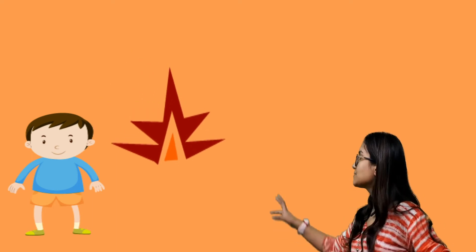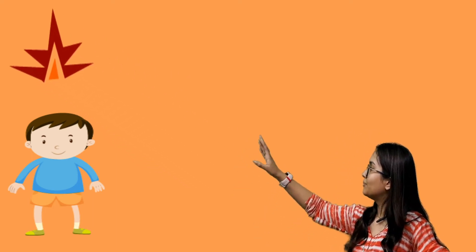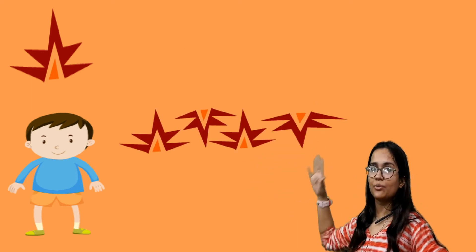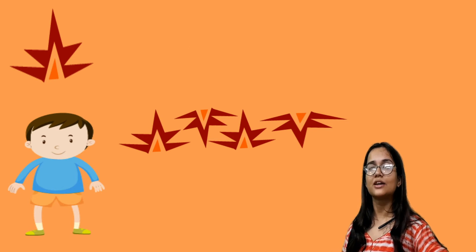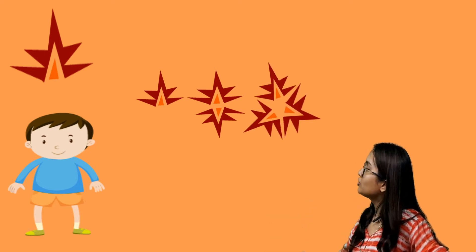You too make three patterns using this particular block. You can make one pattern by keeping one block in a straight direction and then one in the opposite direction, again straight, again opposite. In another pattern, the first row can have one block, the second two, the third three, and so on. You can also decide on your own and make patterns in creative ways.